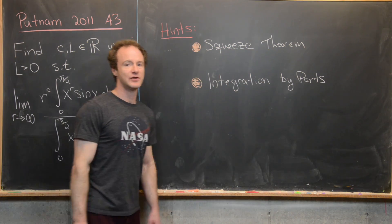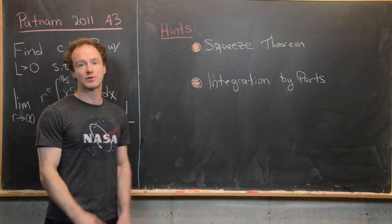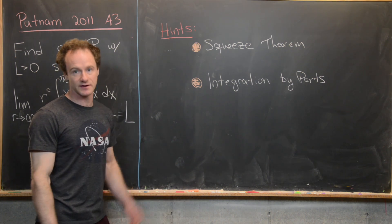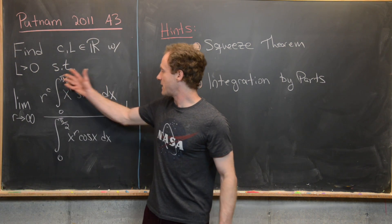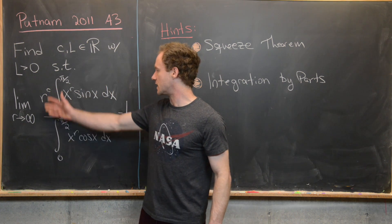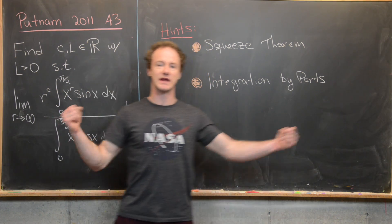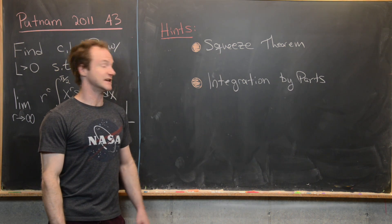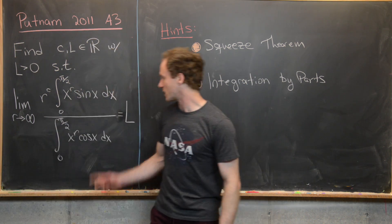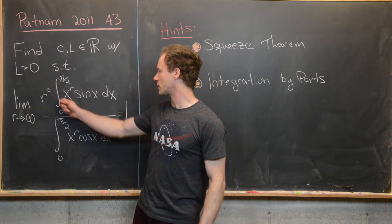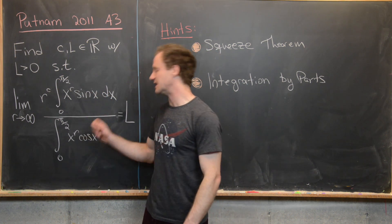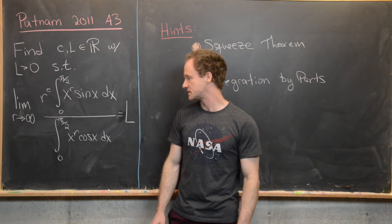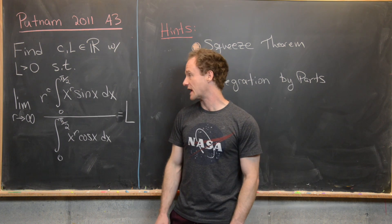I'm going to give some hints so you can try this problem before we look at a solution. The first hint is to use the squeeze theorem — get the limit sandwiched between two objects for which it's easy to find the limit. Another hint is integration by parts. The integral in the numerator and the integral in the denominator are easily translatable into each other via integration by parts.